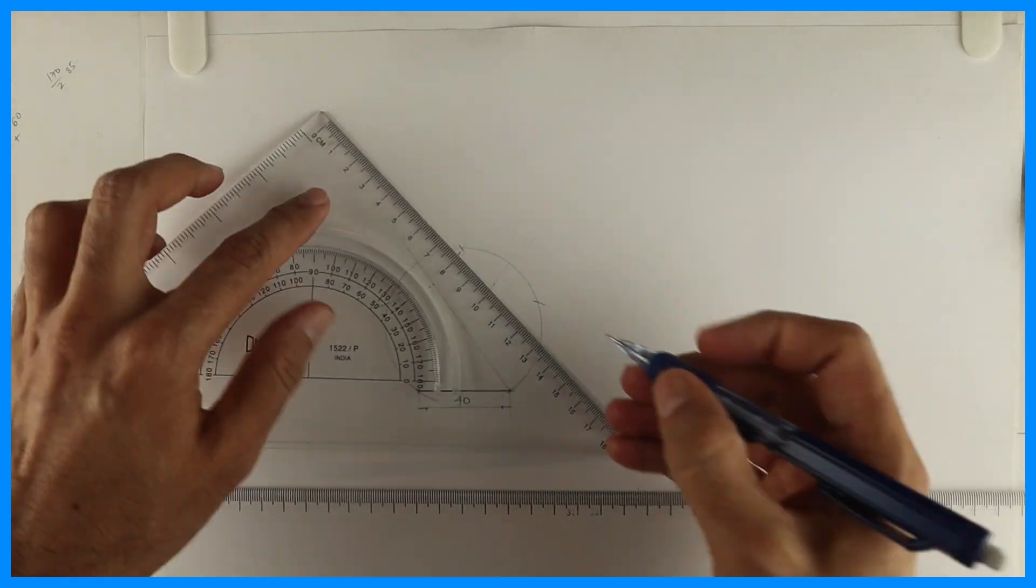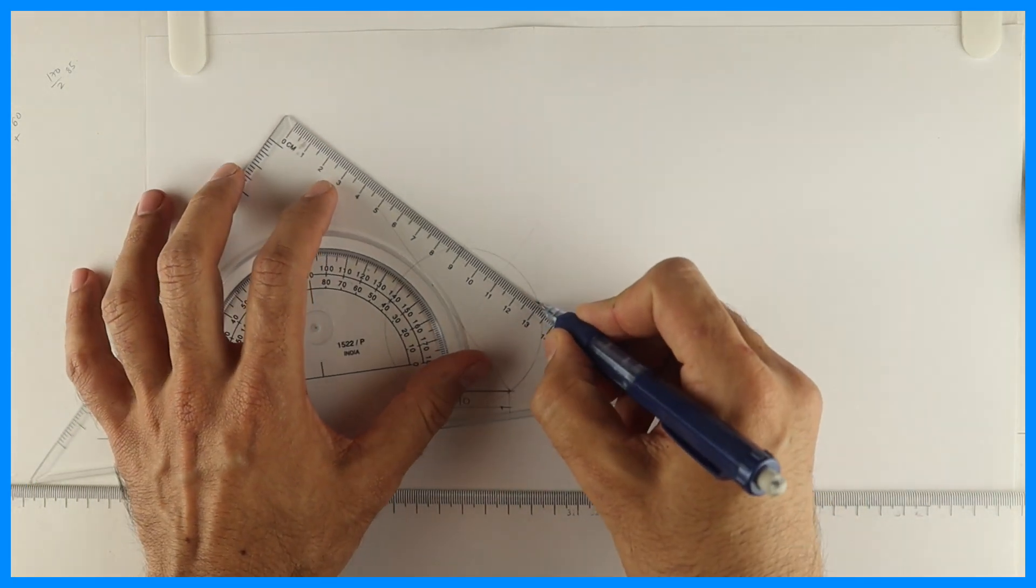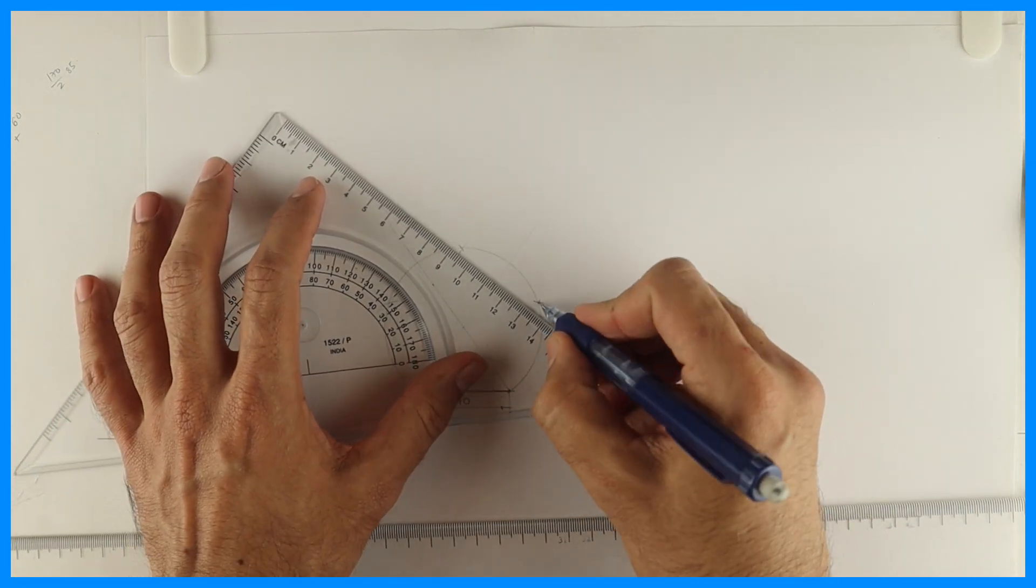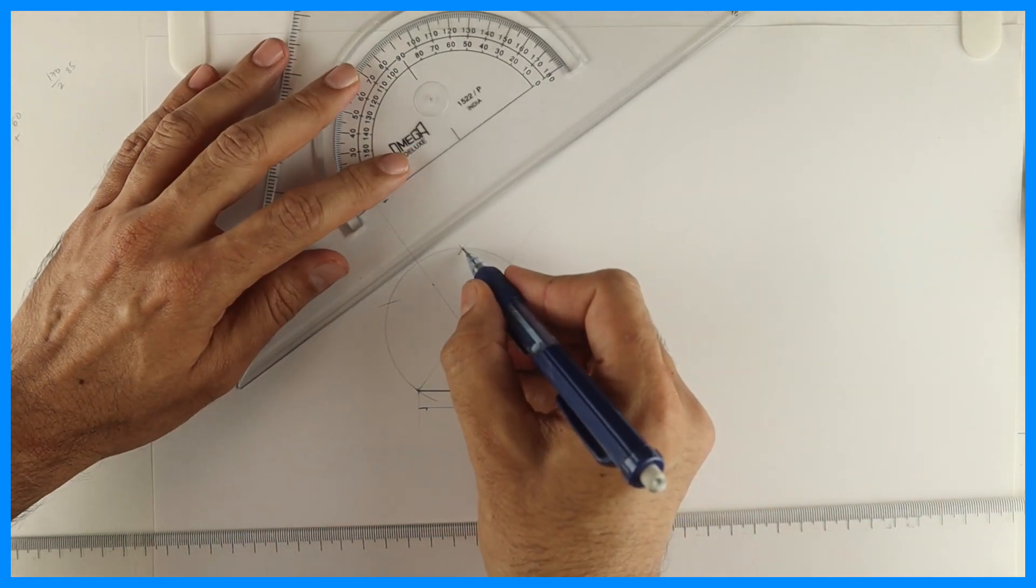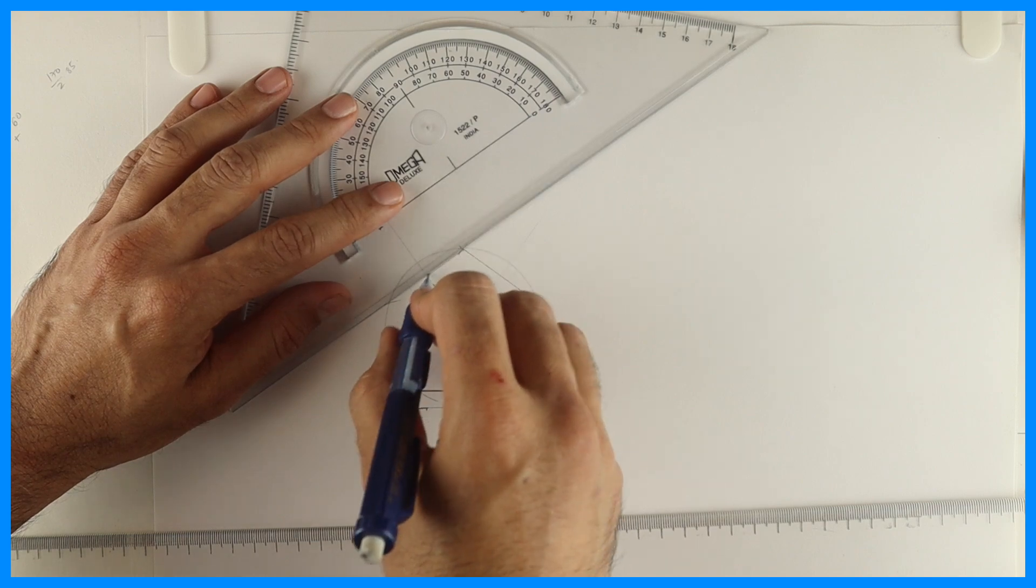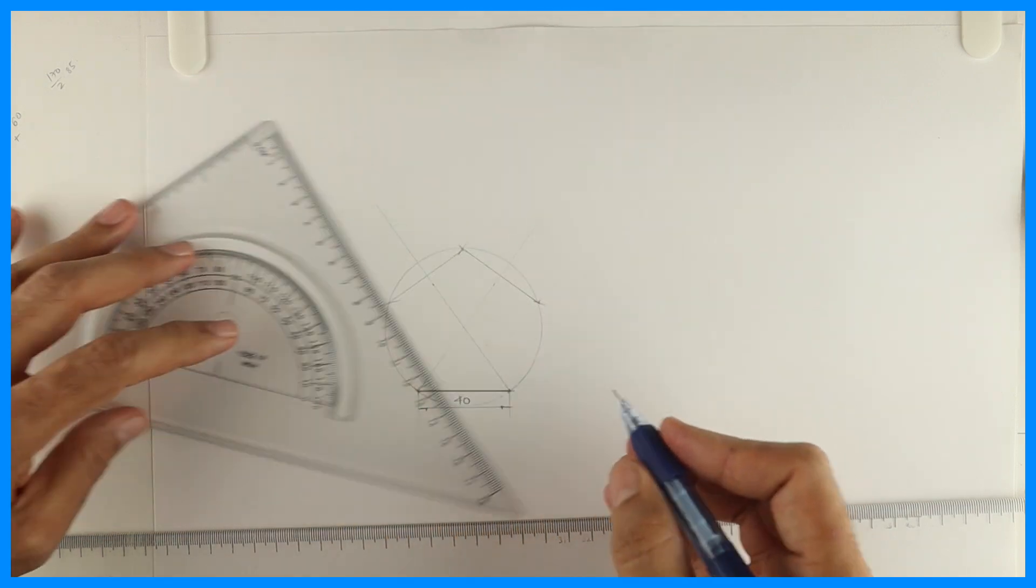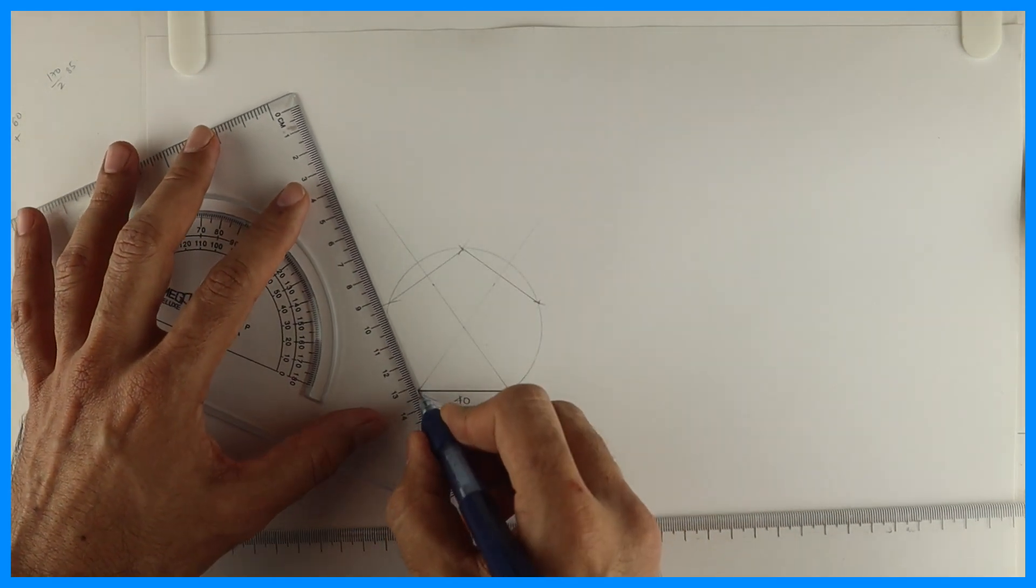It should come exactly above the center, then you join. This will take time if you're doing it for the first time, it may not come accurate.